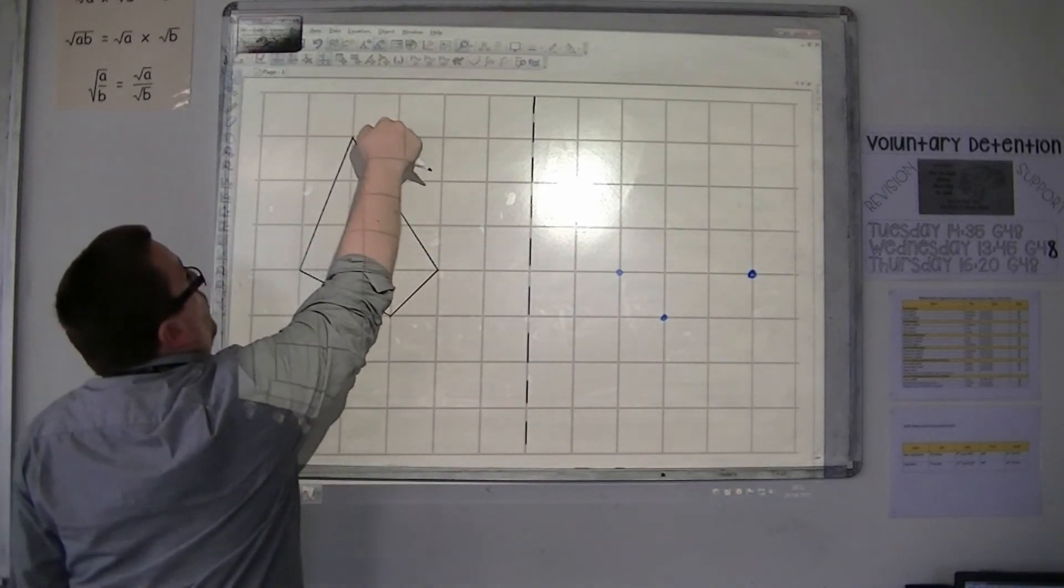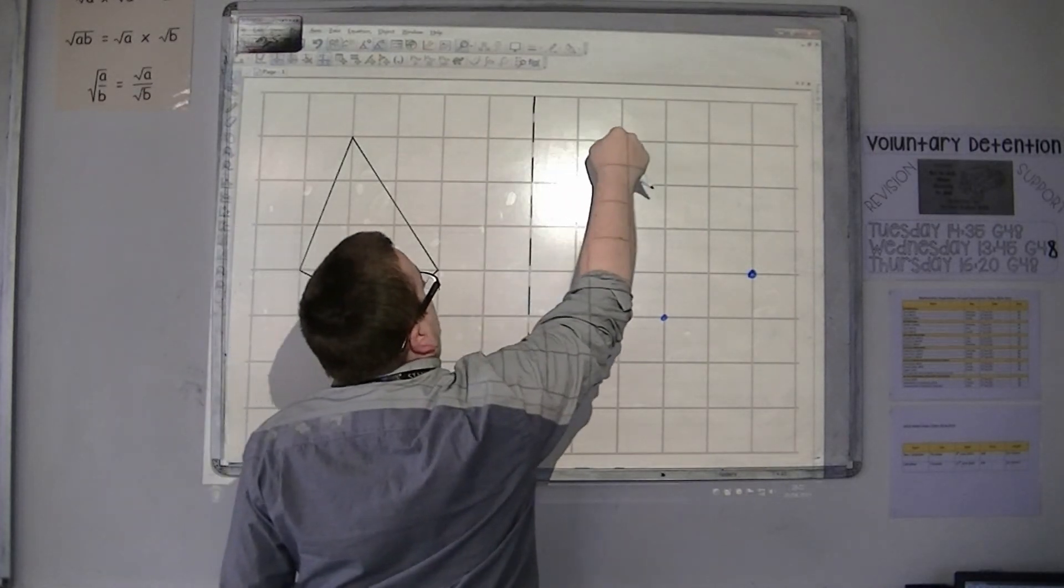So, this point, one, two, three, four, then one, two, three, four.